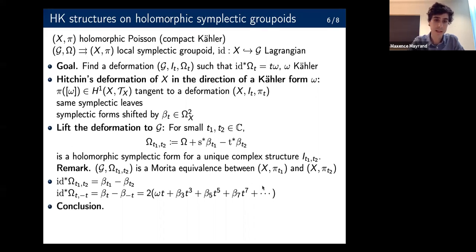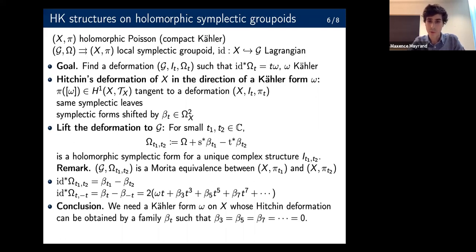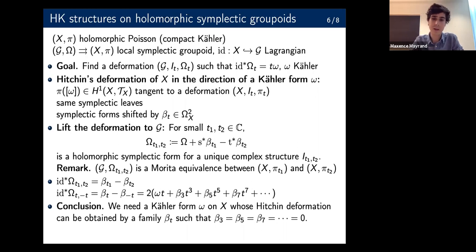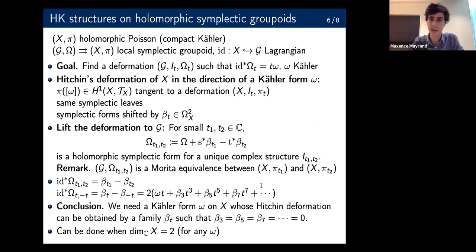So what we need to do is kill all these odd terms. What we need to find a hyperkähler structure on our holomorphic symplectic groupoid is a Kähler form on X whose Hitchin deformation can be obtained by a family of closed two-forms beta_t such that all the higher odd terms except the first are zero. This may seem like a rather obscure and bizarre condition to impose, but the amazing thing is that in complex dimension two, we can always do that.